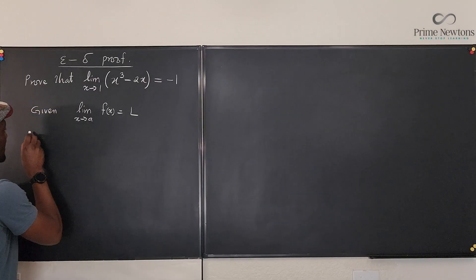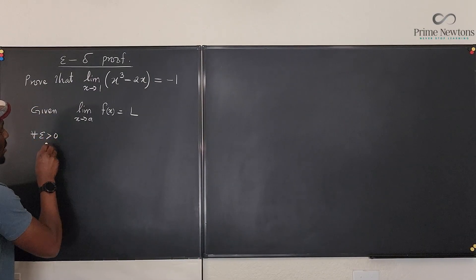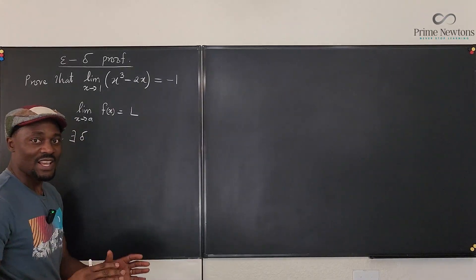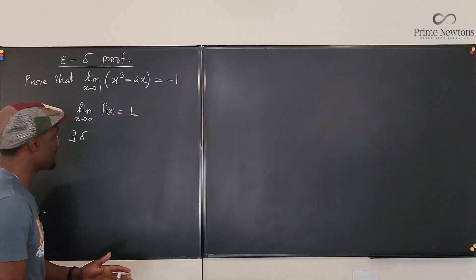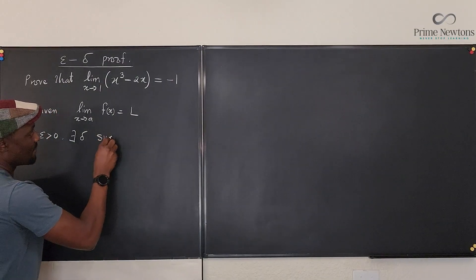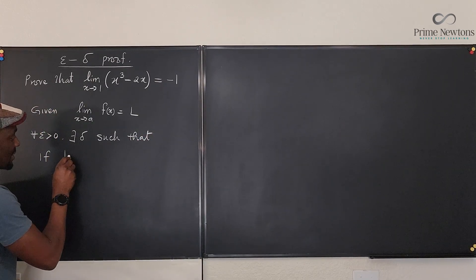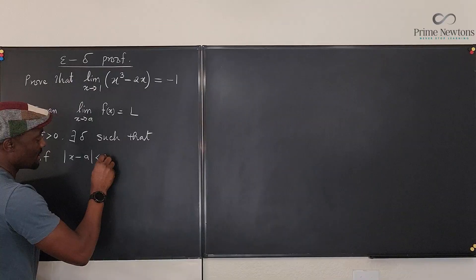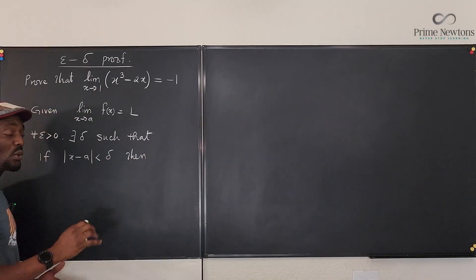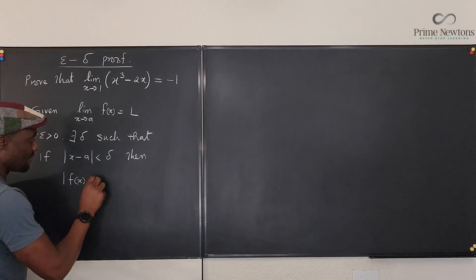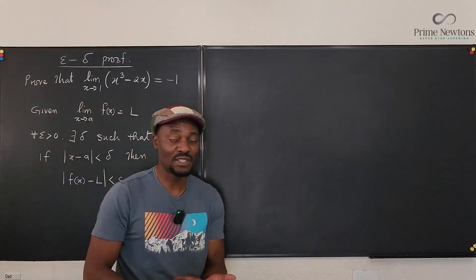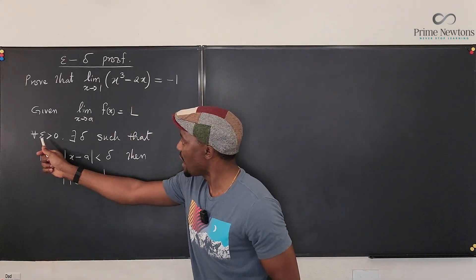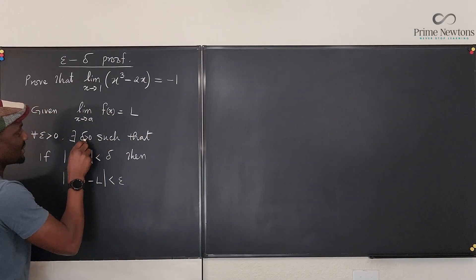If you're ever given this, what we're saying is: for all epsilon greater than zero — that is a positive number — there exists a delta greater than zero. That's the key. For all epsilon greater than zero, there exists a delta, such that if the distance between x and the given point is less than delta, then we can boldly say that the distance of the value of the function from that limit is less than epsilon. This is all you need to prove every time you do a delta-epsilon proof.